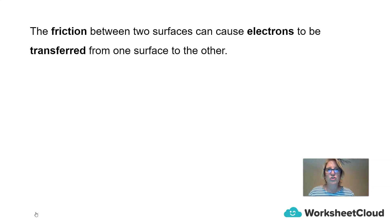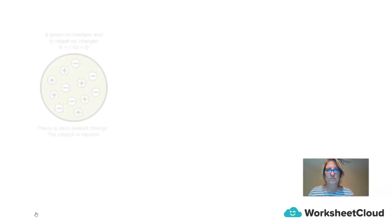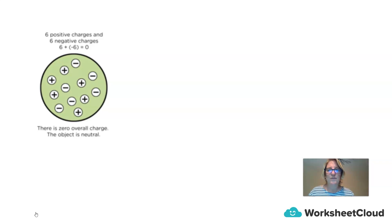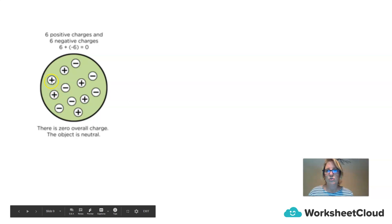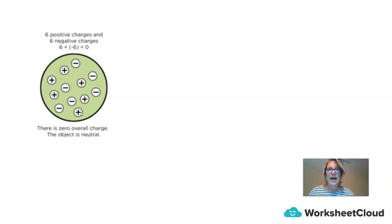The friction between two surfaces can cause electrons to be transferred from one surface to another. If we have a look at this diagram, it has six positive charges and six negative charges. So six plus minus six gives us an overall charge of zero. That means the charge on this substance is zero, and that means the object is neutral.